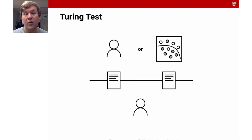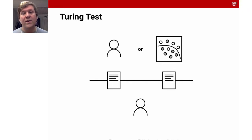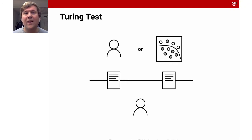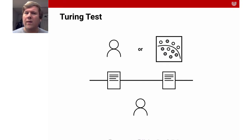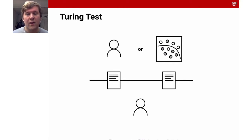Turing also stated that the test result does not depend on the machine's ability to give correct answers, but is only evaluated on how closely its answers resemble those of a human. You can Google it — there are quite a lot of chatbots that get very, very close. Play a bit with these chatbots and then think whether you believe this is actually a good test of intelligence or not.